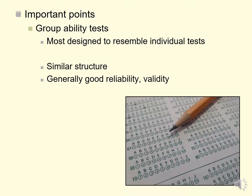To summarize: most group ability tests are designed to resemble individual ability tests, and for the most part have fairly similar structure with good reliability and validity. Raven's Progressive Matrices is something of an odd man out, since it's focal and homogeneous in its approach — not designed to exactly resemble existing individual intelligence tests. Although matrix tasks are a common feature of many intelligence tests in both individual and group formats, and that's largely because Raven's has been around for a very long time and matrices and series have been central to intelligence testing from almost the beginning.